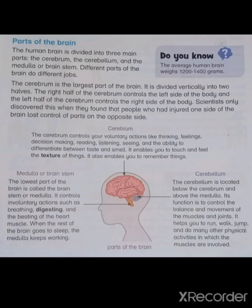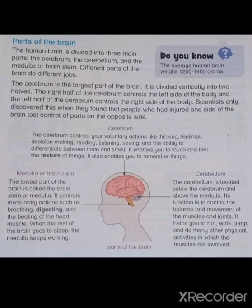The cerebrum is the largest part of the brain. It is divided vertically into two halves. The right half of the cerebrum controls the left side of the body, and the left half of the cerebrum controls the right side of the body. Scientists discovered this when they found that people who had injured one side of the brain lost control of the parts on the opposite side.